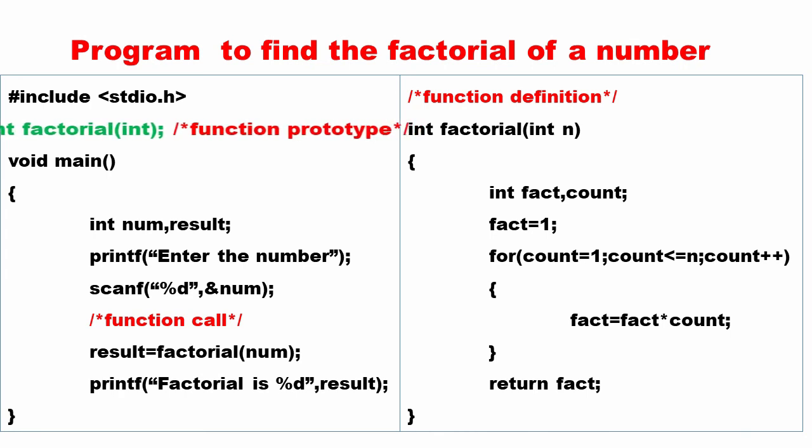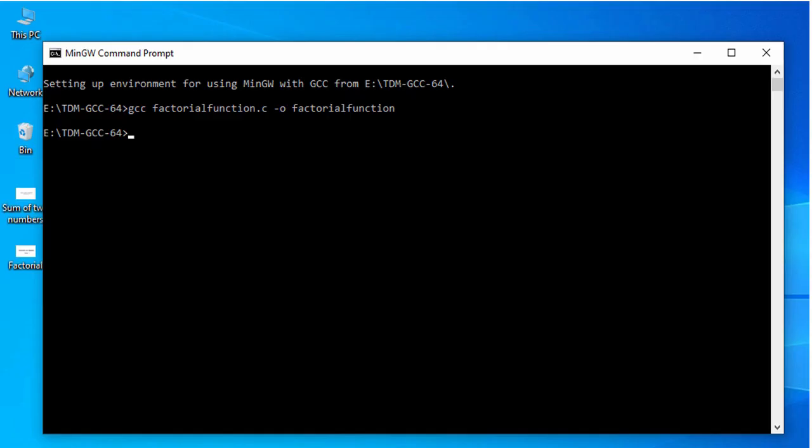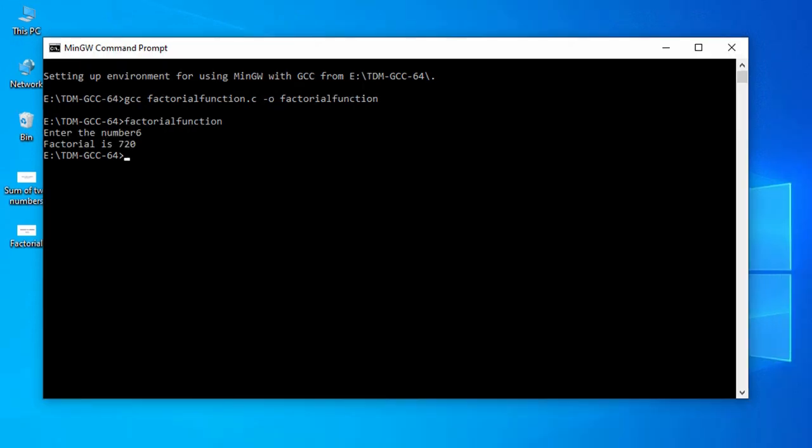Now let us execute this on the system. Type the program in notepad and save as factorialfunction.c. Compile the program using the command gcc factorialfunction.c -o factorialfunction. Run the executable file, given input as 6, got the output 720. That means the program has been executed correctly.